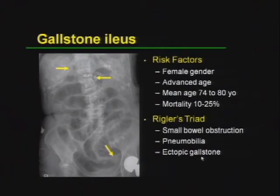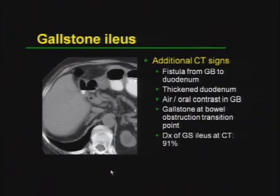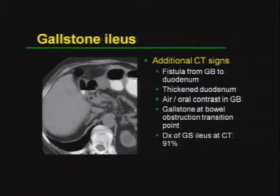Gallstone ileus occurs almost exclusively in elderly patients with a mean age of 74 to 80. It has a high mortality even in modern series. It occurs in the same demographic group as patients who get gallstones — just about 30 years later in life. This happens when a very large gallstone erodes through the gallbladder into the bowel and then extends distally, obstructing the bowel. On plain film, Rigler's triad is sensitive for only about 17% of cases of gallstone ileus. In an elderly woman who has never had surgery with a spontaneous small bowel obstruction, up to 25% have a gallstone ileus, as shown in two large surgical series.